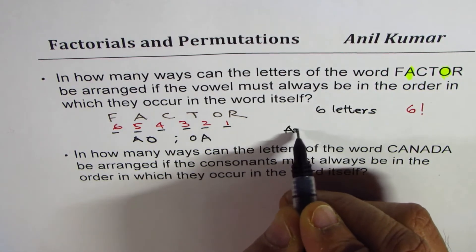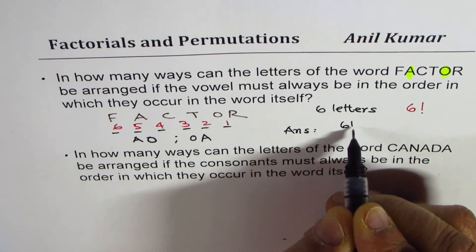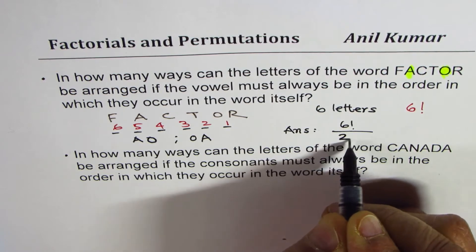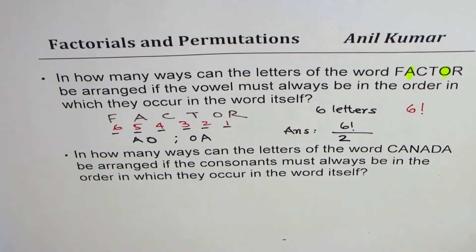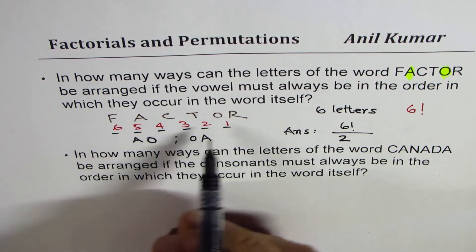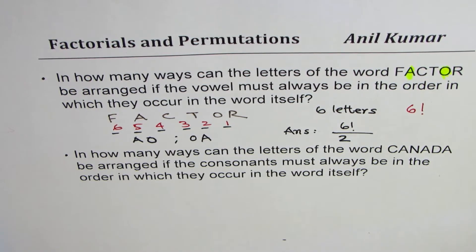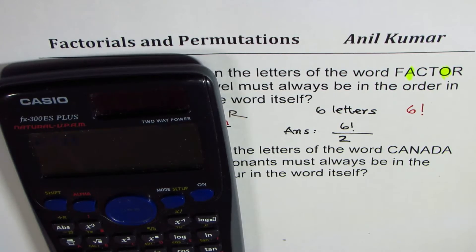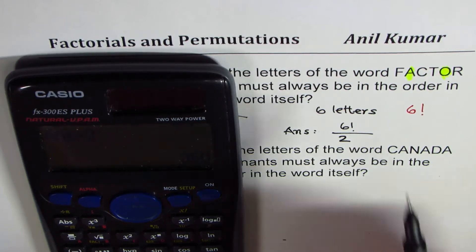So we get our answer as 6 factorial divided by 2. You can always use the calculator or just multiply them. Let's use the calculator to find the answer. So we get 6 times 5 times 4 times 3 times 2 divided by 2, and that gives you 360.